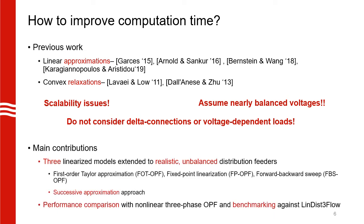This brings us to the main contribution of our work, where we look at three different linearization methods that can be employed to optimize realistic and highly unbalanced grids. We use a successive approximation approach to converge to AC feasible solutions, and we then compare the performance of these methods with the non-linear three-phase OPF version. Furthermore, we also benchmark these methods against one of the most widely used linear approximations in distribution grid analysis, which is the three-phase version of Lindis flow.